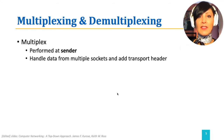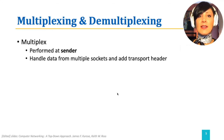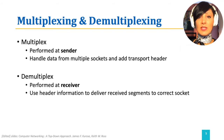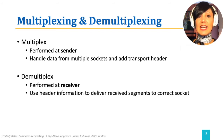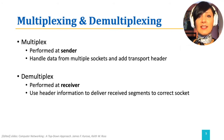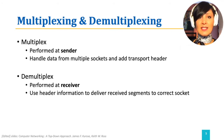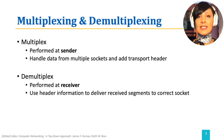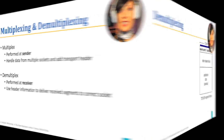At the receiver side, the transport layer action is to receive the segments from the network layer, examine the fields to identify the receiving socket, and deliver the segment contents to the target socket. This is called demultiplexing.